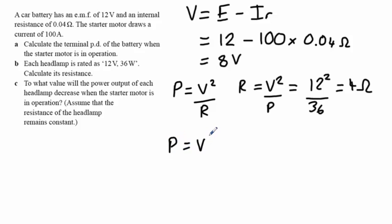So now, our power equals V squared divided by R. But the voltage here is only 8 volts. Our resistance is 4 ohms from before, which will give us a power output of 16 watts. So the power output of our lamps is halved as a result of the internal resistance.